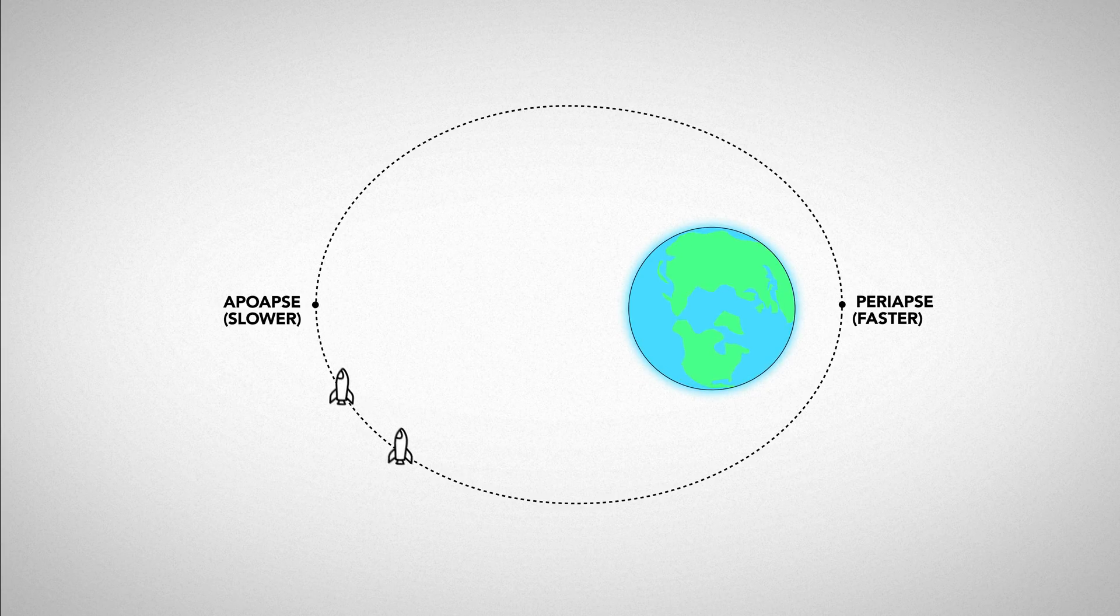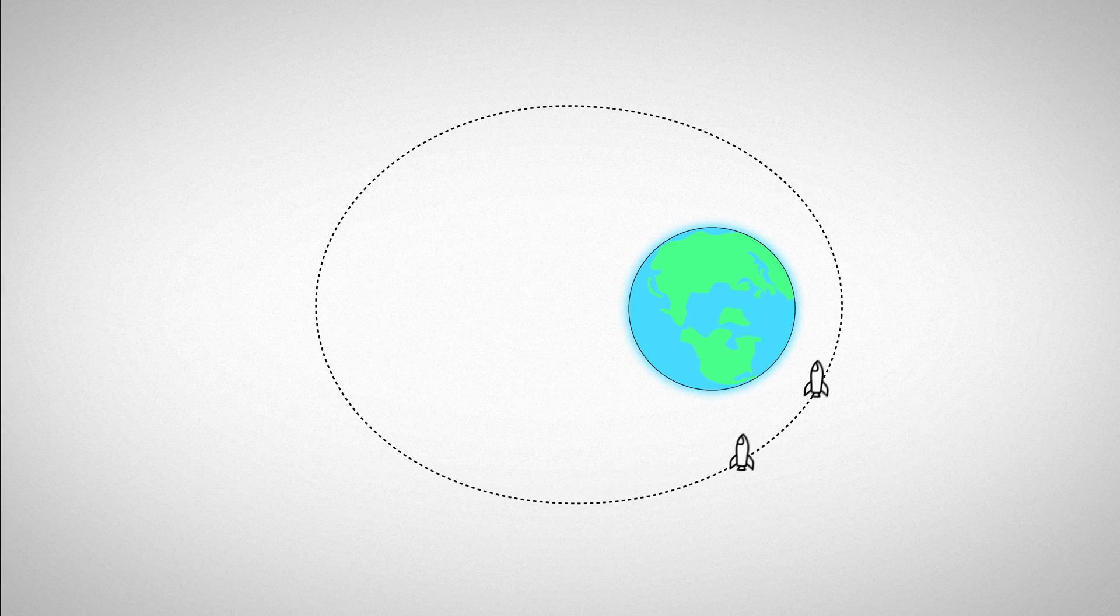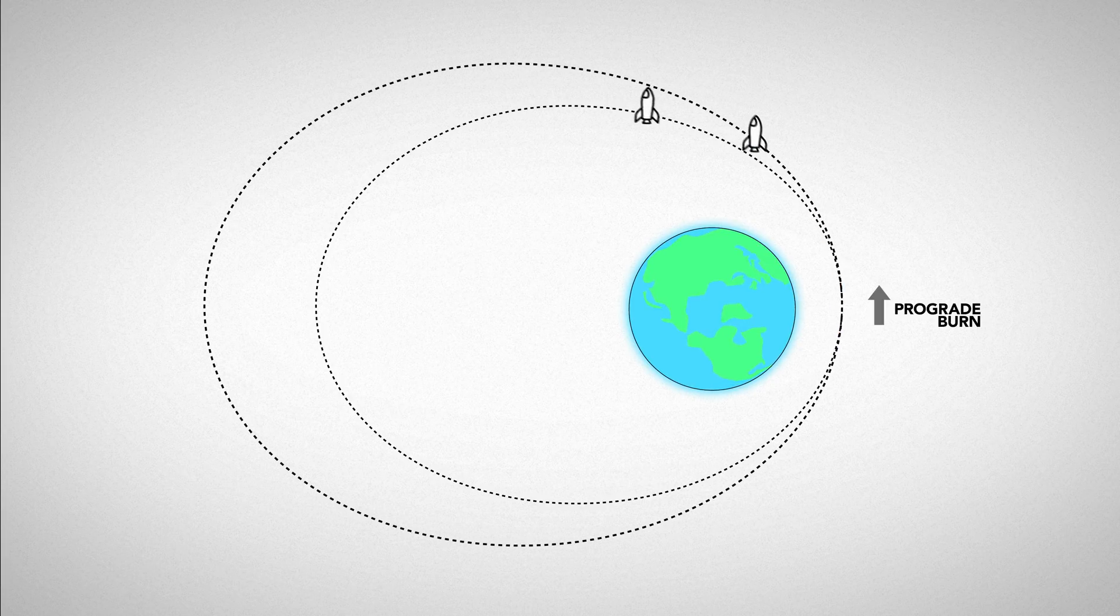And if you have the same orbital path as something else, that already means you're going at the same velocity and speeding up or slowing down will actually mean you're just changing the shape of your orbit.